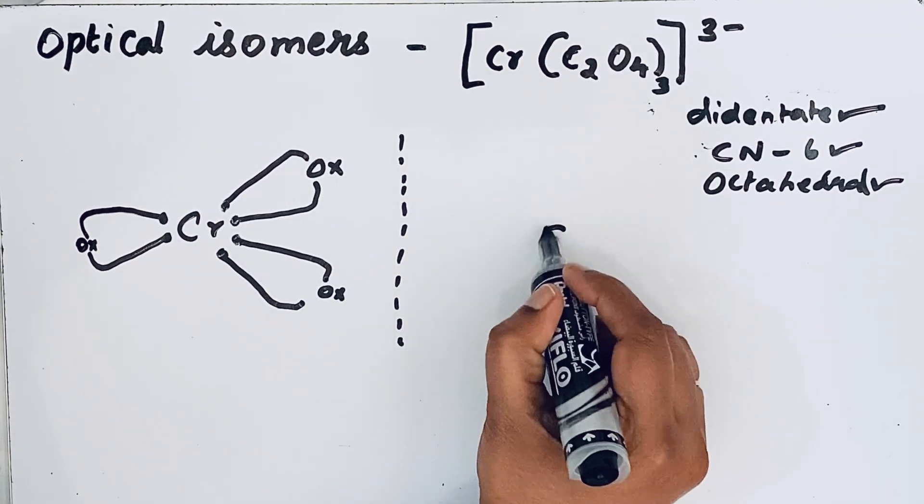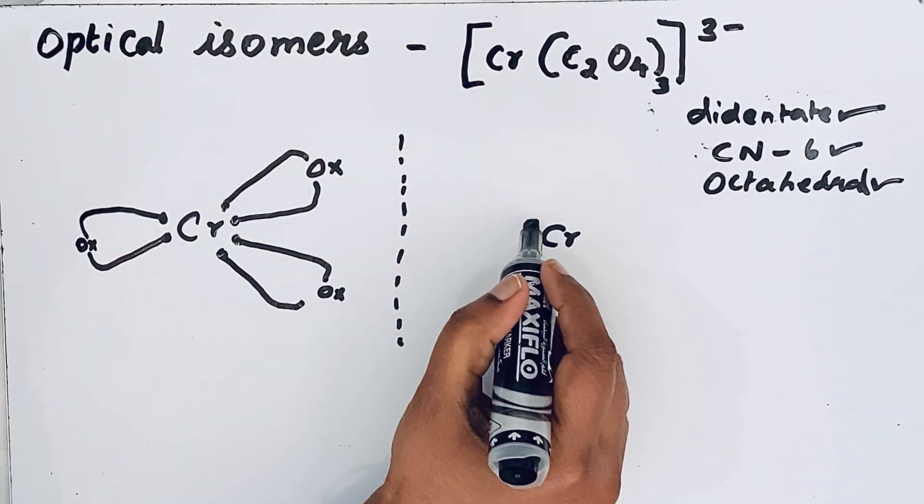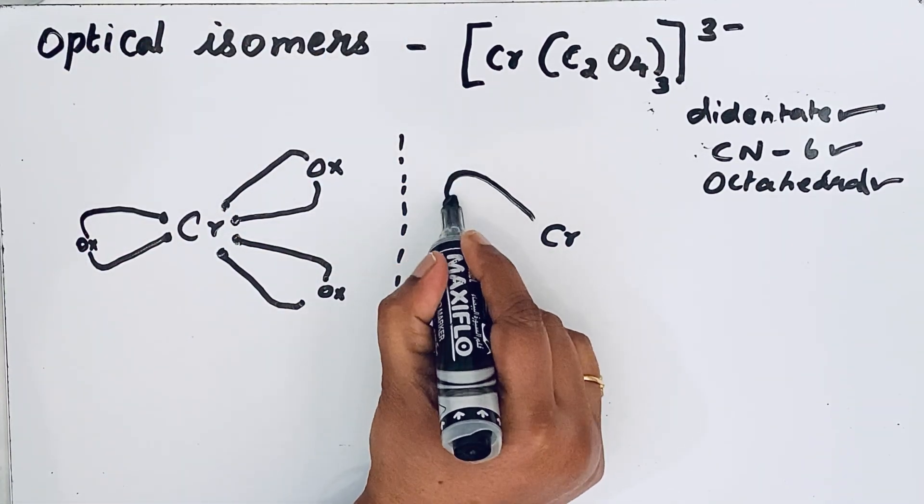So first let us draw Cr. Same like our little fingers are close to each other, the same way we go to draw OX.